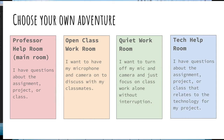Their options are: professor help room, which is the main room — they can always come back if they need help from the professor. I also have an open class work room where they can leave their mics on to talk to each other. I have a quiet work room where everyone works quietly until the end of class. And I also have someone from Educational Technology Services with me who will be in the tech help room — useful if you have a digital project assignment and want tech support available. Even if you're not doing this open work setup, you can still put descriptions of the different rooms so students know what they're selecting. You could even list groups and have them go into their own groups.